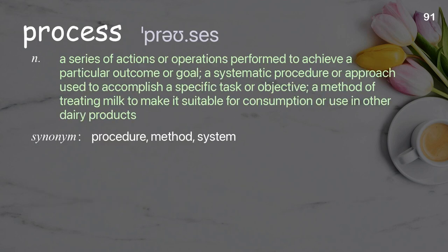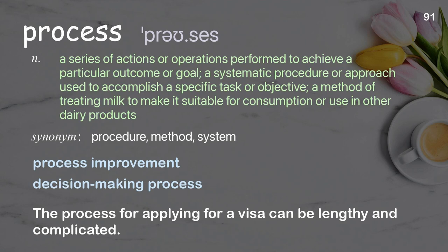Process. A series of actions or operations performed to achieve a particular outcome or goal; a systematic procedure or approach used to accomplish a specific task or objective. Examples: process improvement, decision-making process. The process for applying for a visa can be lengthy and complicated.